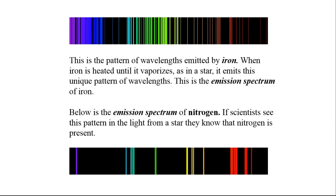This is the pattern of wavelengths emitted by iron. When iron is heated until it vaporizes, as in a star, it emits this unique pattern of wavelengths. This is the emission spectrum of iron. Below is the emission spectrum of nitrogen.